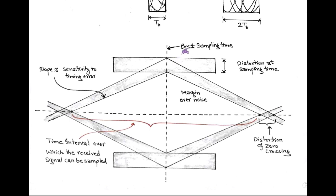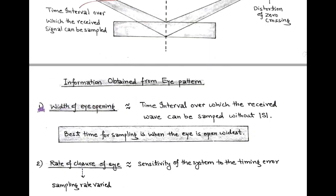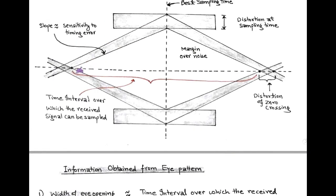From this eye pattern, the performance of the baseband PAM system can be monitored and analyzed using many parameters, as shown in the figure. At the best sampling time, we get the appropriate eye pattern based on the Nyquist criteria for distortionless transmission. The horizontal block represents the distortion at the sampling time. The first information obtained from the eye pattern is the width of the eye opening — the time interval over which the received wave can be sampled without inter-symbol interference — and the best time for sampling is when the eye is open widest. During this process, there is a distortion of zero crossing, which varies as the width of eye opening changes.